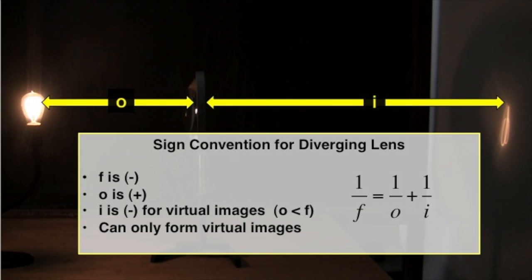For diverging lenses, the focal length is negative, the object distance is positive, and the image distance is negative. We can only form virtual images with diverging lenses.